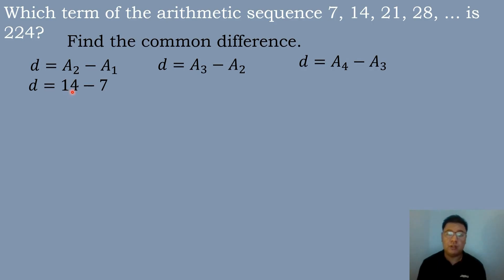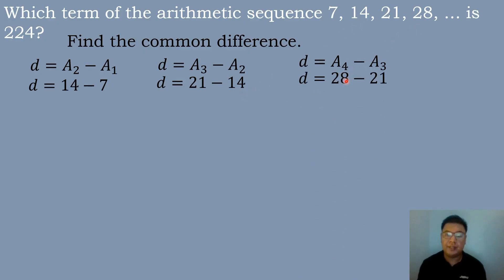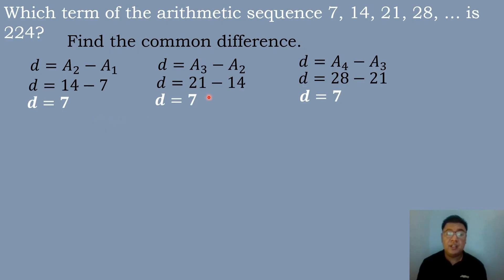A sub 2 is equal to 14, and the first term is equal to 7. The third term is equal to 21 minus the second term 14, and the fourth term 28 minus the third term 21. Subtracting: 14 minus 7 is 7, 21 minus 14 is 7, and 28 minus 21 is equal to 7. So the value of the common difference is equal to 7.